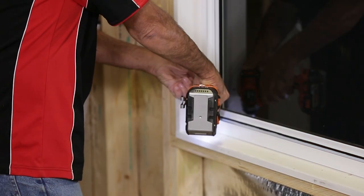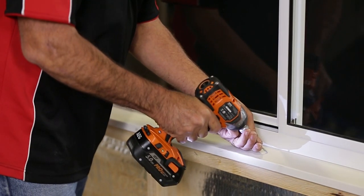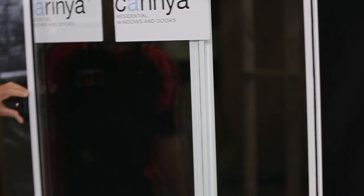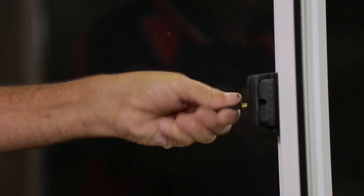Once you're happy the window is sitting right, fix off the rest of the window using screws or nails with a gauge and spacing appropriate for the wind load. As a final check, open and close the window a few times to make sure the window and the lock are operating correctly.